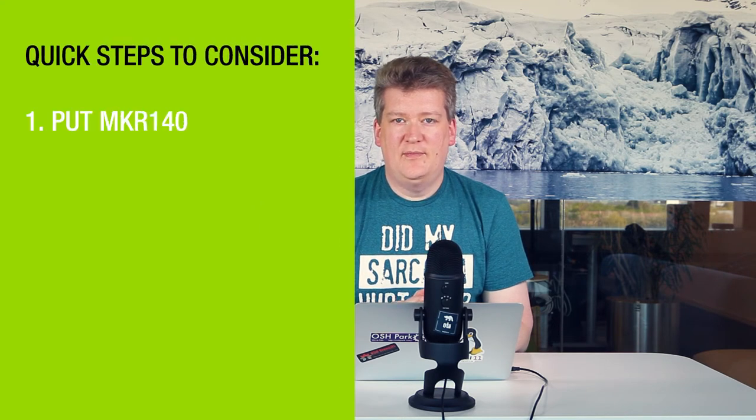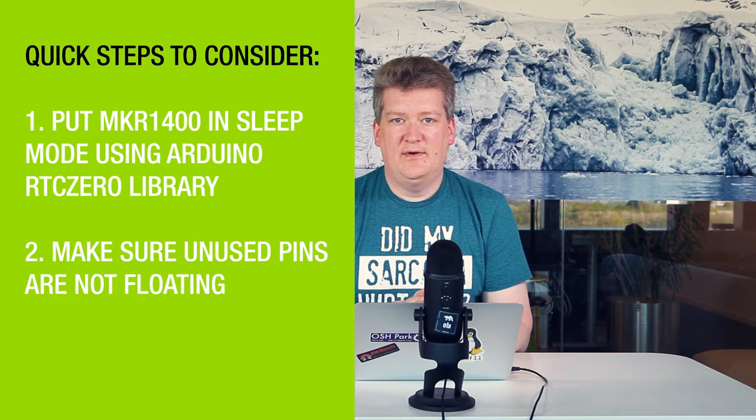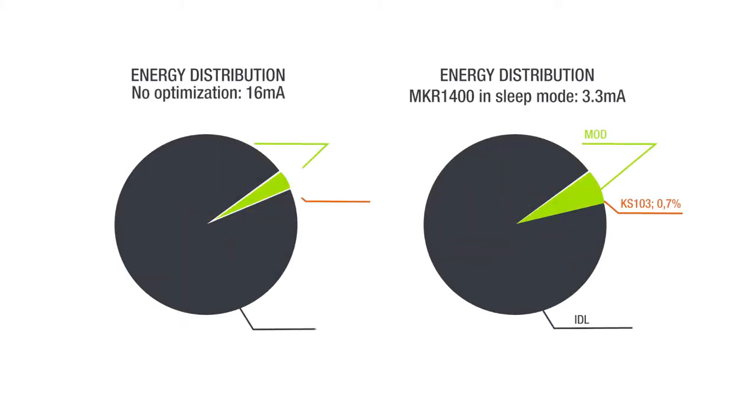It's immediately obvious that we need to try to lower the current consumption in idle mode. The first step would be to put the MKR1400 in sleep mode. A quick check using the Arduino RTCzero library and making sure that the unused pins are not left floating will result in an average idle current of 3 milliamps, bringing down the average current consumption to 3.3 milliamps — but we're still spending 90% of the energy in idle mode.